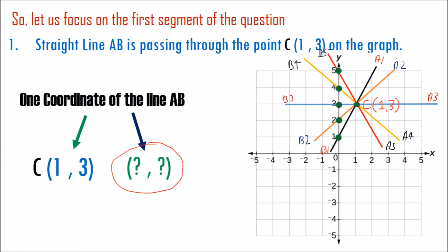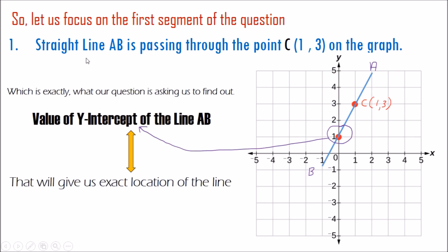This tells us that if we could find out the y-intercept of our line AB, we would have our second coordinate. Once we have our second coordinate, we could locate our line easily. Our second coordinate is the y-intercept value of line AB — exactly where line AB cuts the y-axis. If we find that point, we join the two coordinates to get our line AB. That is exactly what this question is asking.